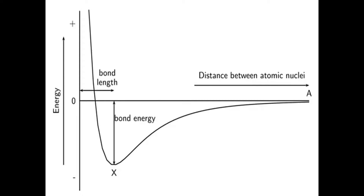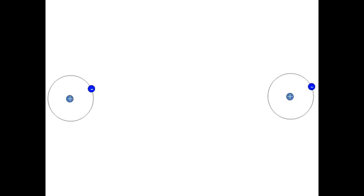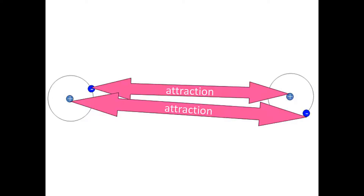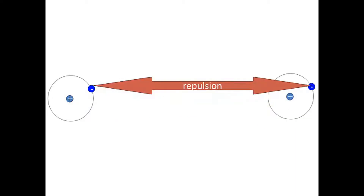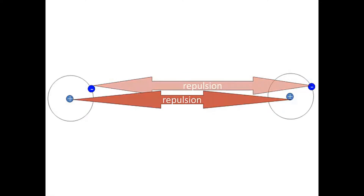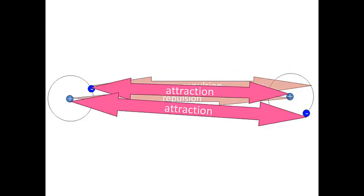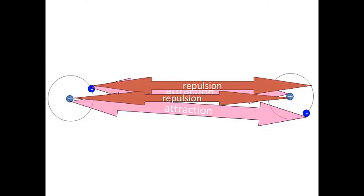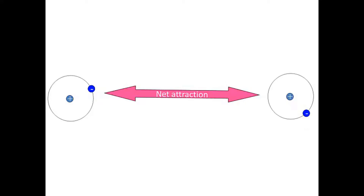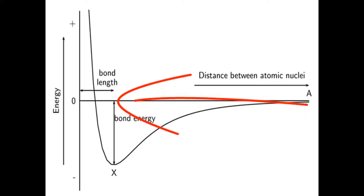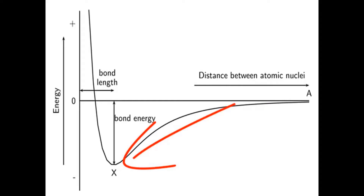Now why is this graph shaped as it is? Let's discuss this in terms of attraction and repulsion between two hydrogen atoms. When they are very far apart, the opposite charges attract one another — the electrons from one attract the protons of the other — but the like charges repel one another. The electrons from one repel the electrons of the other, and the protons of one repel the protons of the other. When they are far apart, these two hydrogen atoms attract one another more strongly than they repel one another, so there's a net attraction force between them that does work on them, accelerating them together.